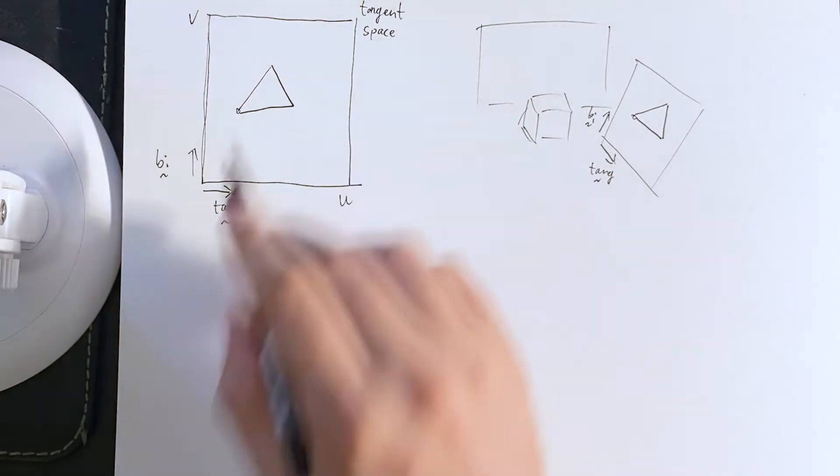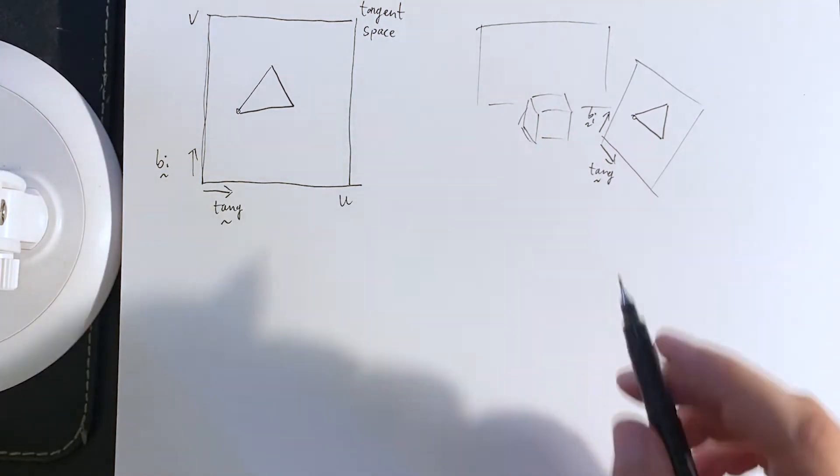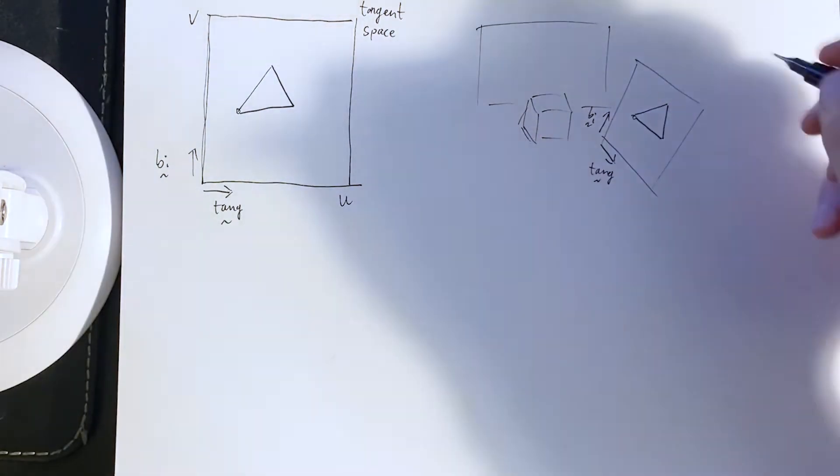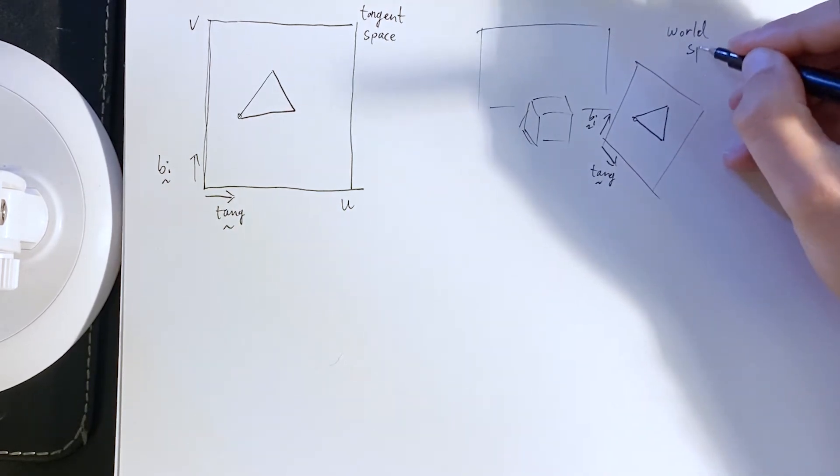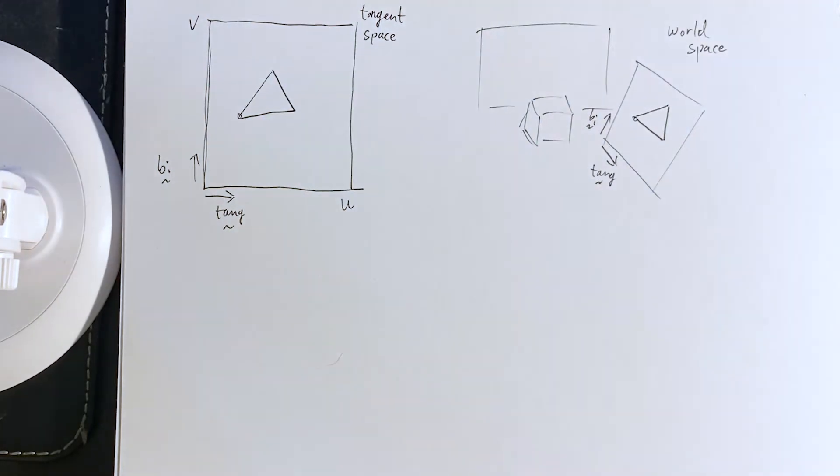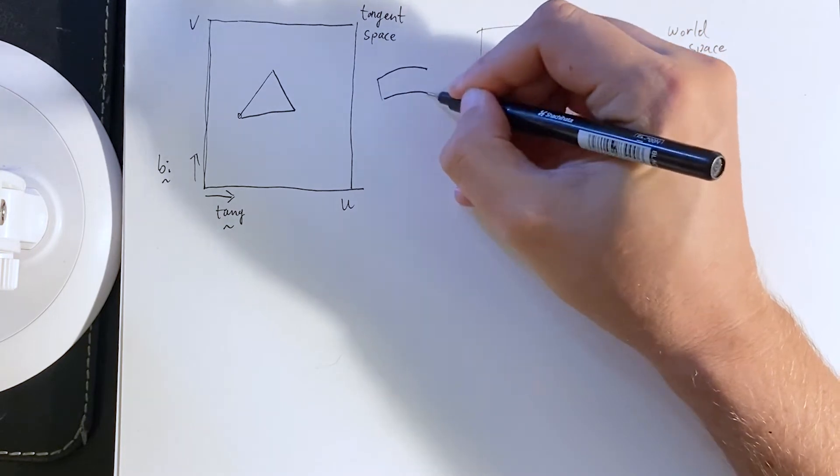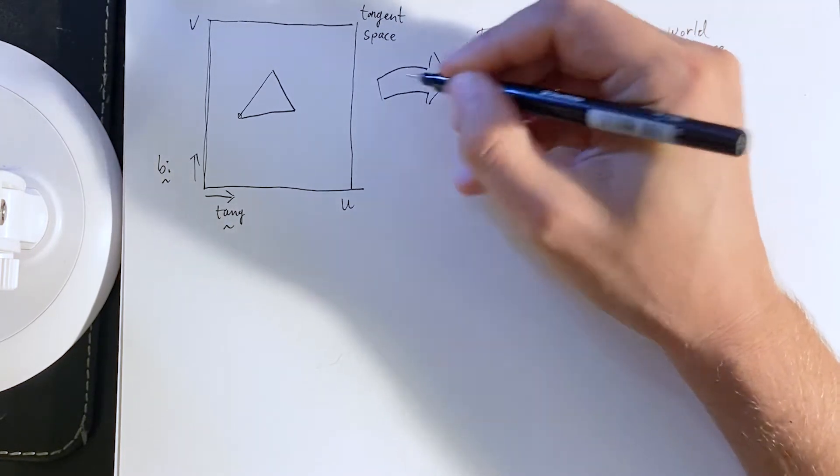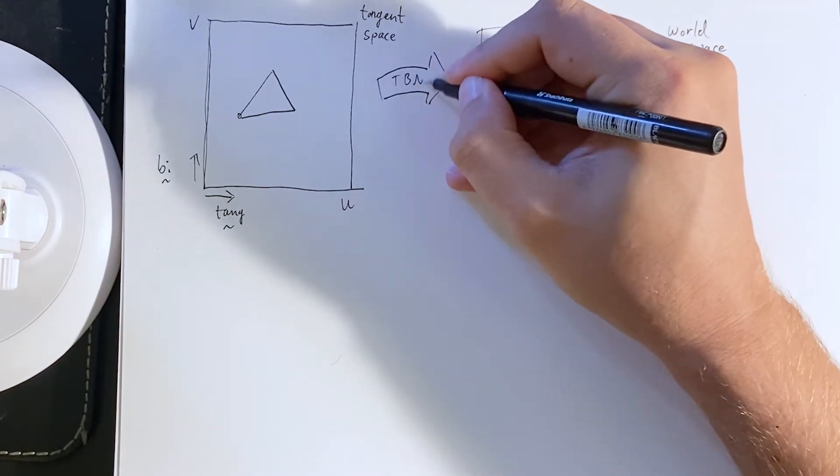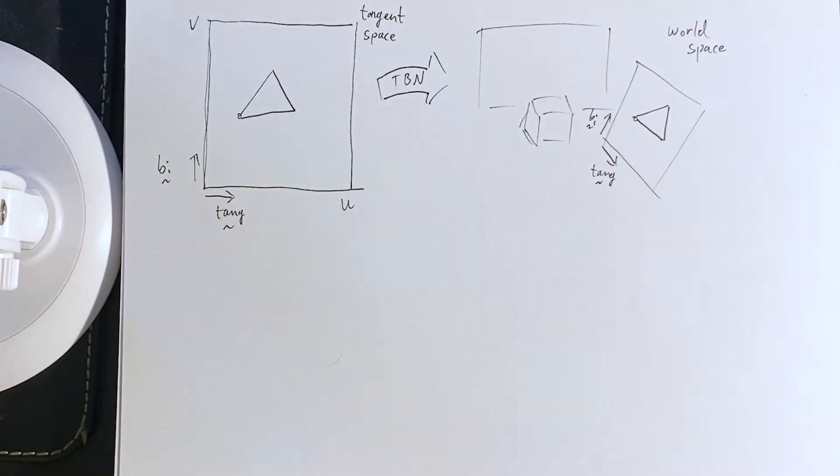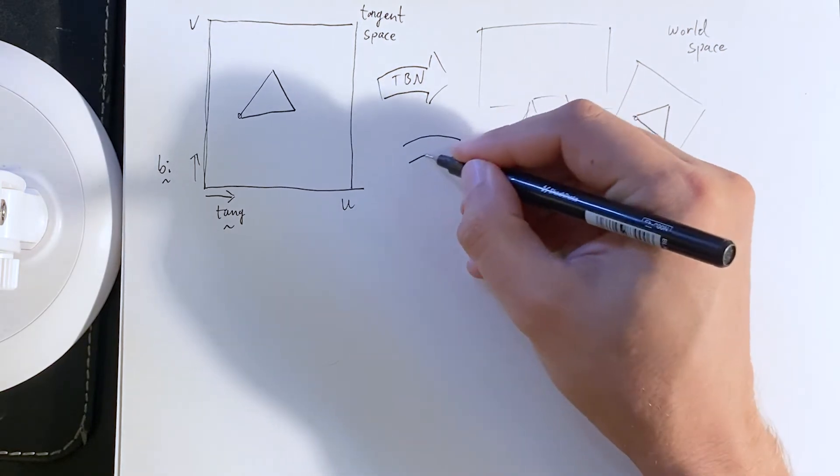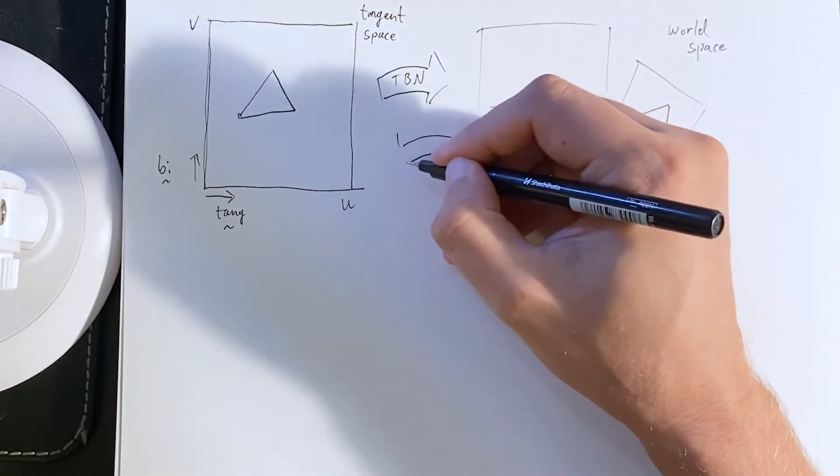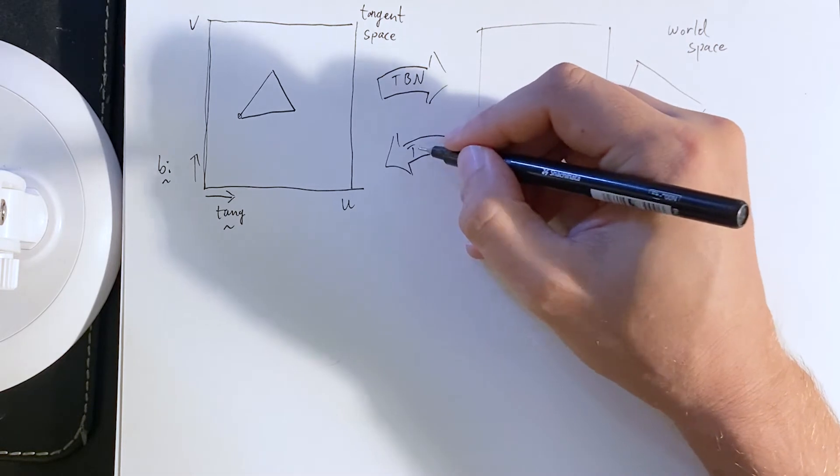All the textures that we have are in tangent space, and we want to know how to change them to world space. Essentially, this is done with a tangent-by-tangent normal matrix. And, more importantly, we can also go back to tangent space with the inverse of that.